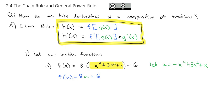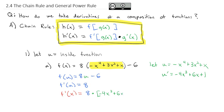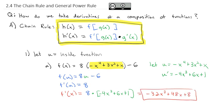We're going to take the derivative both of f of u and of u. The derivative of f of u is just 8. And the derivative of u is negative 4x cubed plus 6x plus 1. So to put it all together in our final answer, our derivative of f of x — our formula says we take the derivative of the outside function, which was 8, and multiply it by the derivative of the inside function, negative 4x cubed plus 6x plus 1. Distributing that 8 gives us negative 32x cubed plus 48x plus 8 for our final derivative.